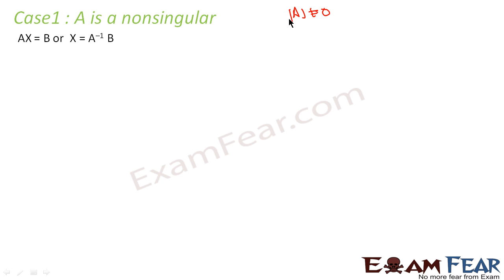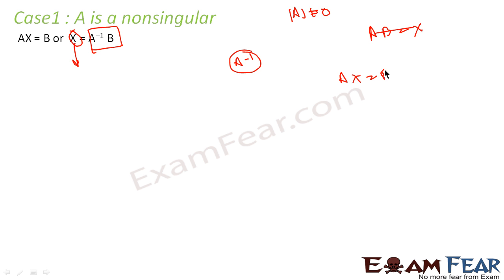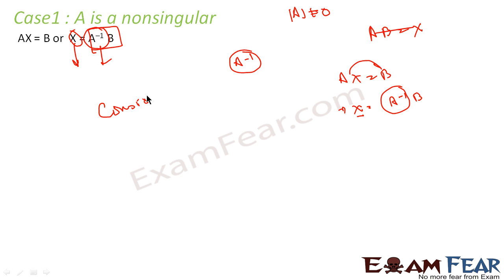If the determinant of A is non-zero, then A inverse exists. From AX = B, we get x = A⁻¹B. If A inverse exists, then a solution exists. If A inverse doesn't exist, there is no unique solution. So the first case — where A is non-singular — gives us a definite solution, and the system is consistent.